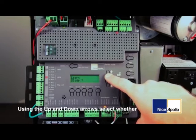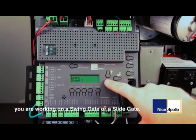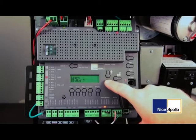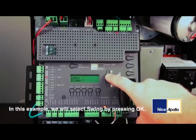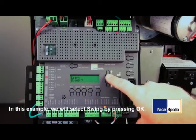Using the up and down arrows, select whether you are working on a swing gate or a slide gate. In this example, we will select swing by pressing OK.